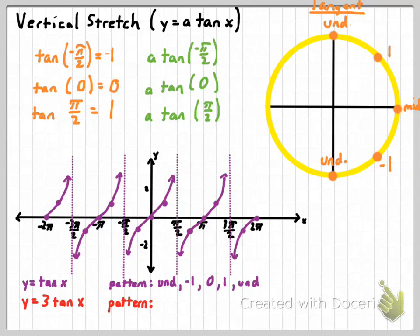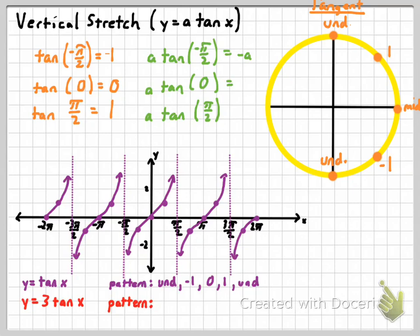What happens then if instead of just the tangent of negative pi over 4, we have a times the tangent of negative pi over 4? The tangent of negative pi over 4 is equal to negative 1, and then negative 1 times a is just the opposite of a. The tangent of 0 is 0, and 0 times a is 0. The tangent of pi over 4 is positive 1, and positive 1 times a is a.